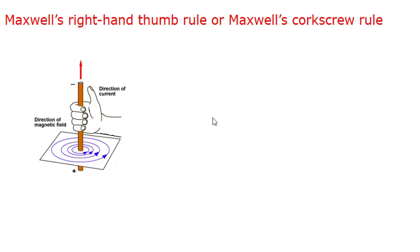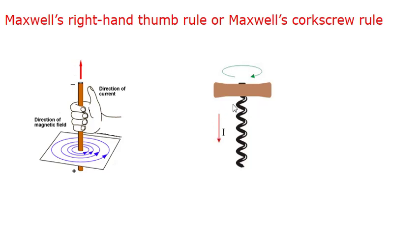The direction of magnetic field can also be found out by using the cork screw rule. Imagine driving a cork screw in the direction of current — the direction in which you turn its handle is the direction of magnetic field. In the diagram you can see that to drive the screw in the downward direction I have to rotate the handle in the clockwise direction. The direction in which I am pushing the screw indicates the direction of current, and the direction in which I rotate the handle indicates the direction of magnetic field. So either using Maxwell's right hand thumb rule or Maxwell's cork screw rule we can find the direction of magnetic field produced by a straight current-carrying conductor.